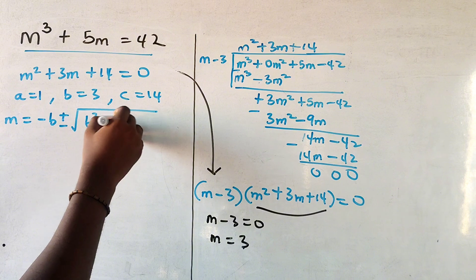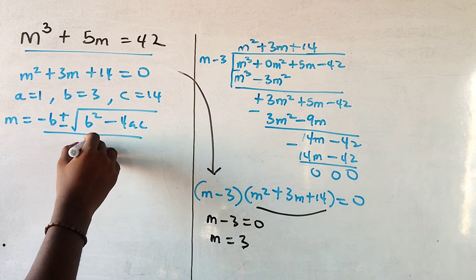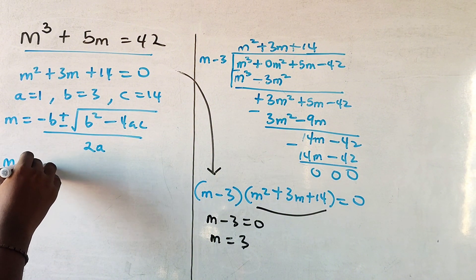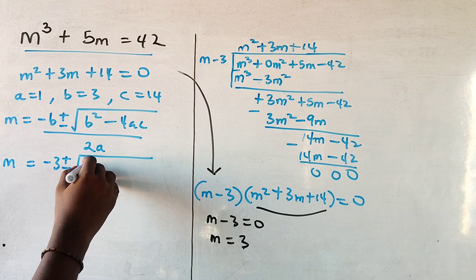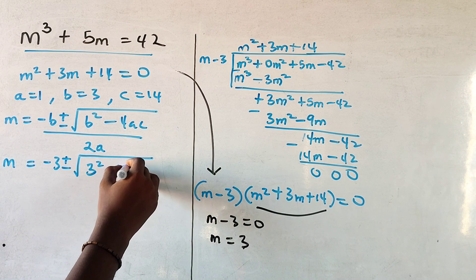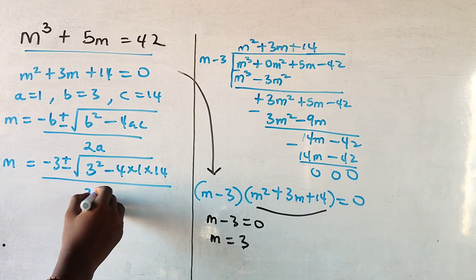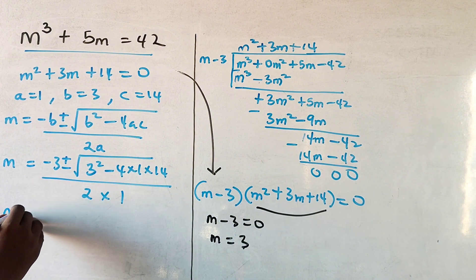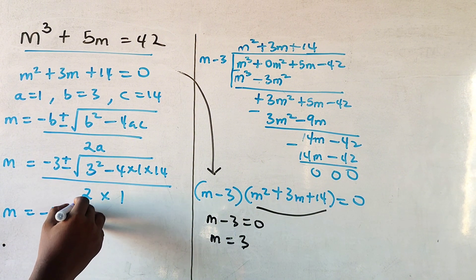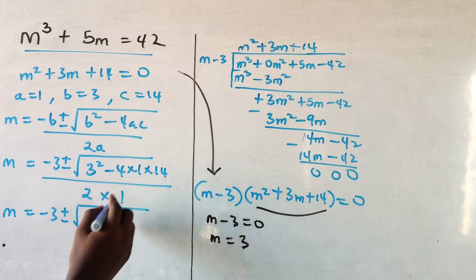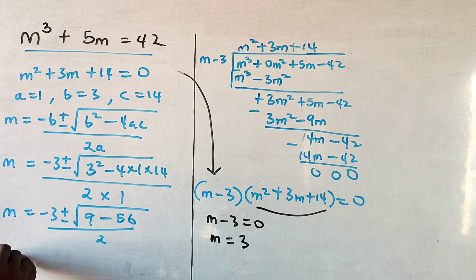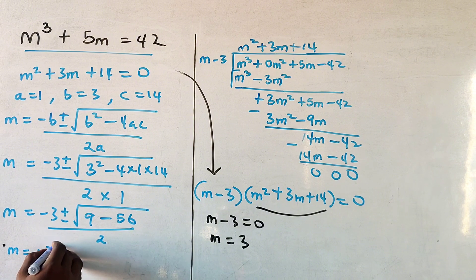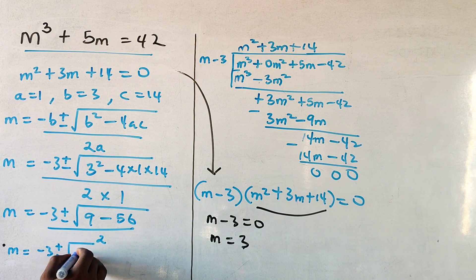Using the quadratic formula, m equals minus b plus or minus square root of b squared minus 4ac all over 2a. Now your b is 3, so minus 3 plus minus square root of 3 squared minus 4 times 1 times 14 all over 2 times 1. So m will be minus 3 plus minus square root of 9 minus 56, which is minus 47, all over 2.